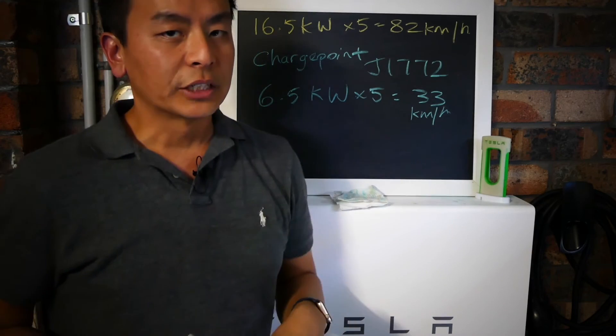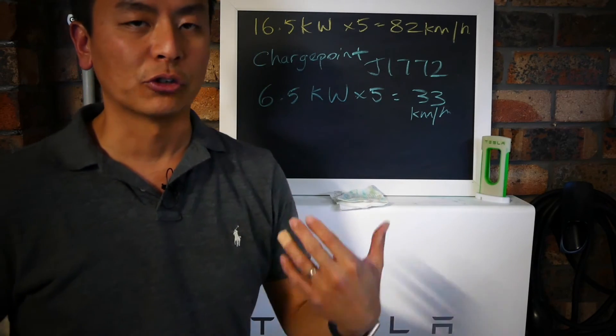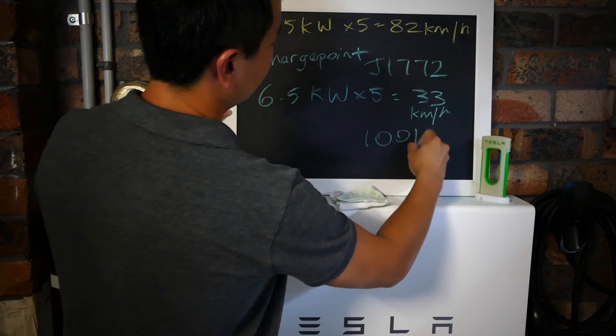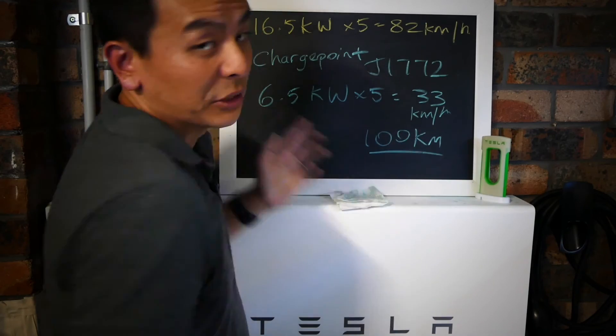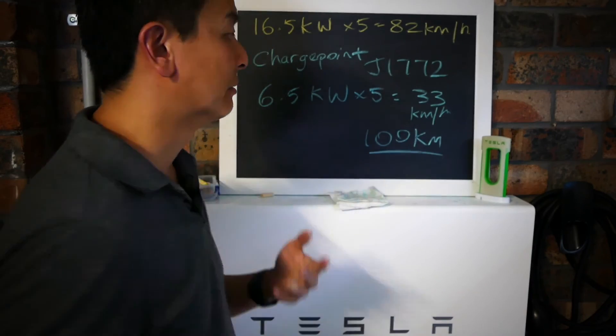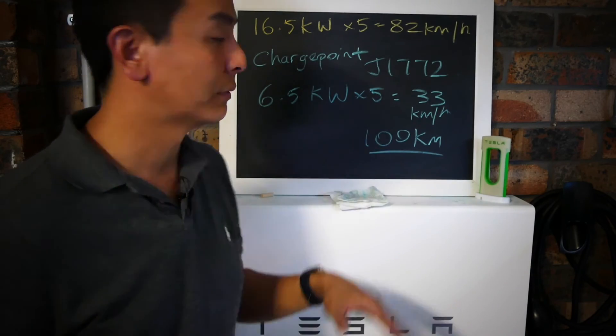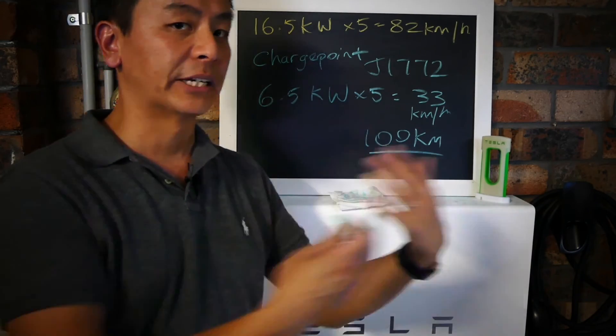Let's say you go to Westfield, you spend three hours shopping, coffee, whatever. In three hours you'll get about 100 kilometers back. It's pretty good, right? It's free and the car's not doing much anyway. If you had an ICE car, that wouldn't be refueling itself. 100 kilometers - you'll definitely make your journey back and then some.